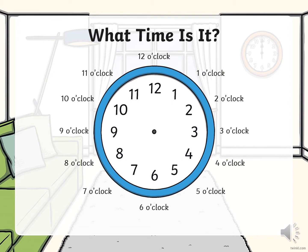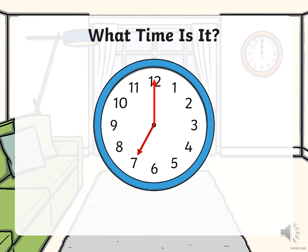Now we are going to play a game and see if we can work out what time it is on the clock. What time is it? First, I am going to look at the long arm and it's pointing to 12, so that means o'clock. Then I look at the short hour hand and I see that it's pointing to 7 — so this means it is 7 o'clock.